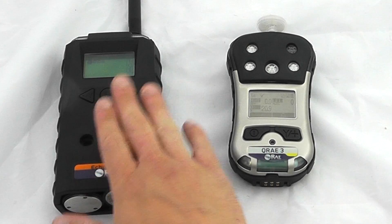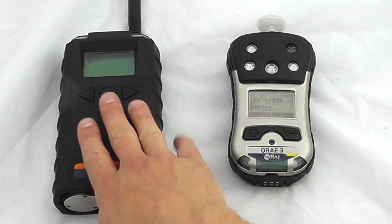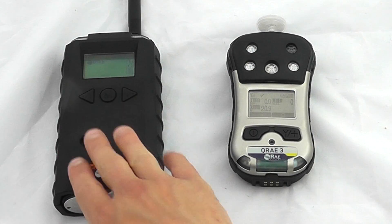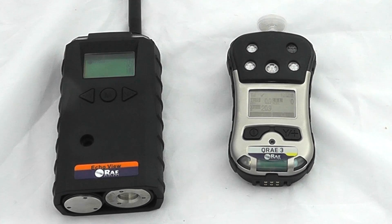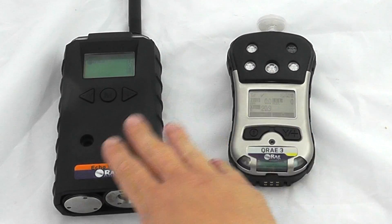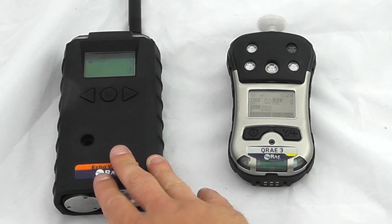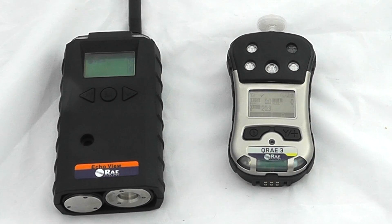Any alarms on this device will now show up on the Echo View remotely. The distance limit depends on the site conditions. These are high-quality radio frequencies, but if you're in a stainless steel box, the signal might struggle to get through. Be aware of line-of-sight issues. If I apply some gas to the Q-Ray 3, we'll see an alarm reflected on the Echo View network.